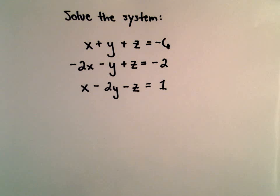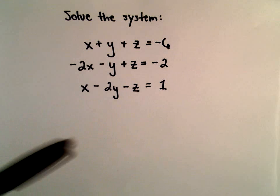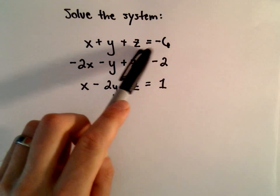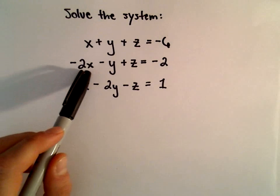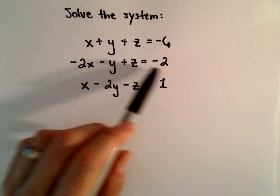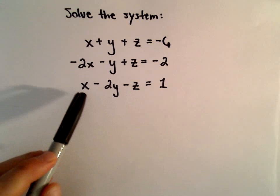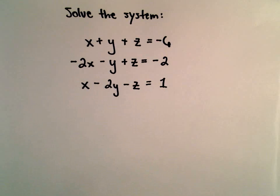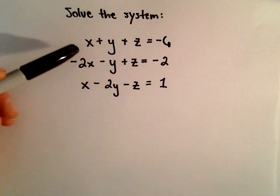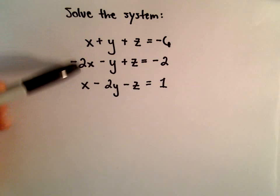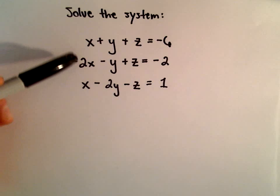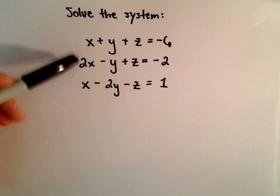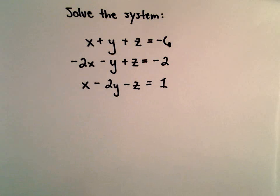In this example we're going to solve the system of equations: x plus y plus z equals negative six, negative two x minus y plus z equals negative two, and x minus two y minus z equals negative one. What I'm going to do is use elimination to create two equations that involve two variables only, and I want them to be the same two variables.